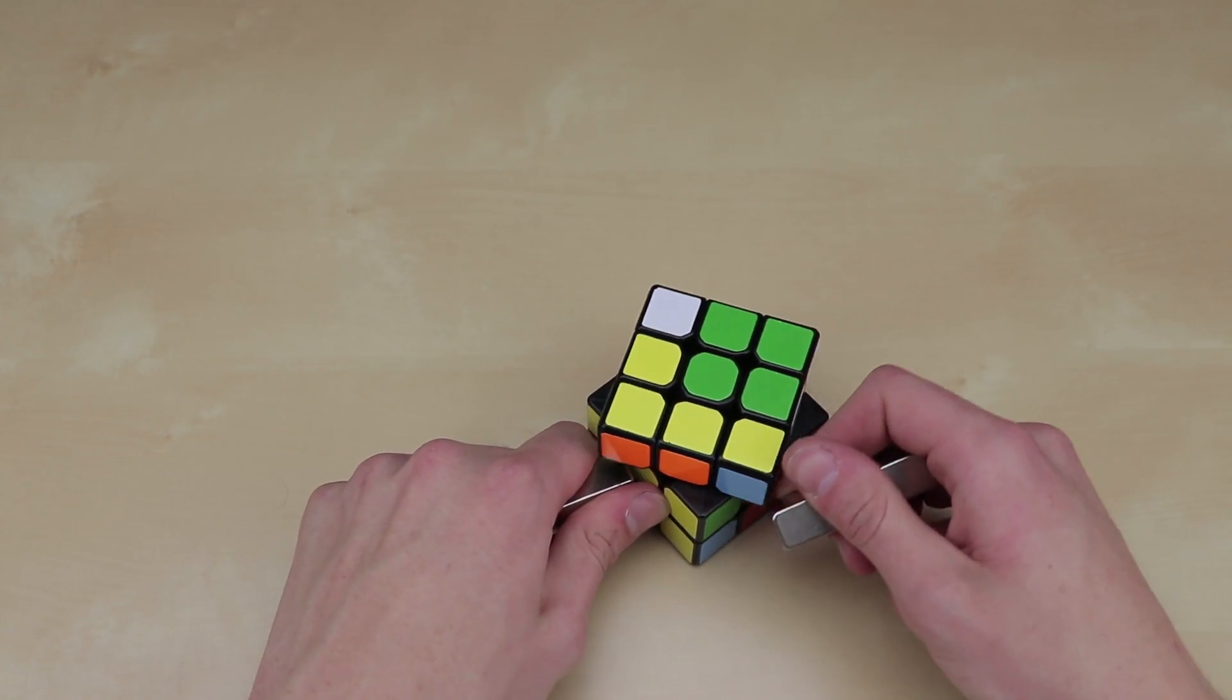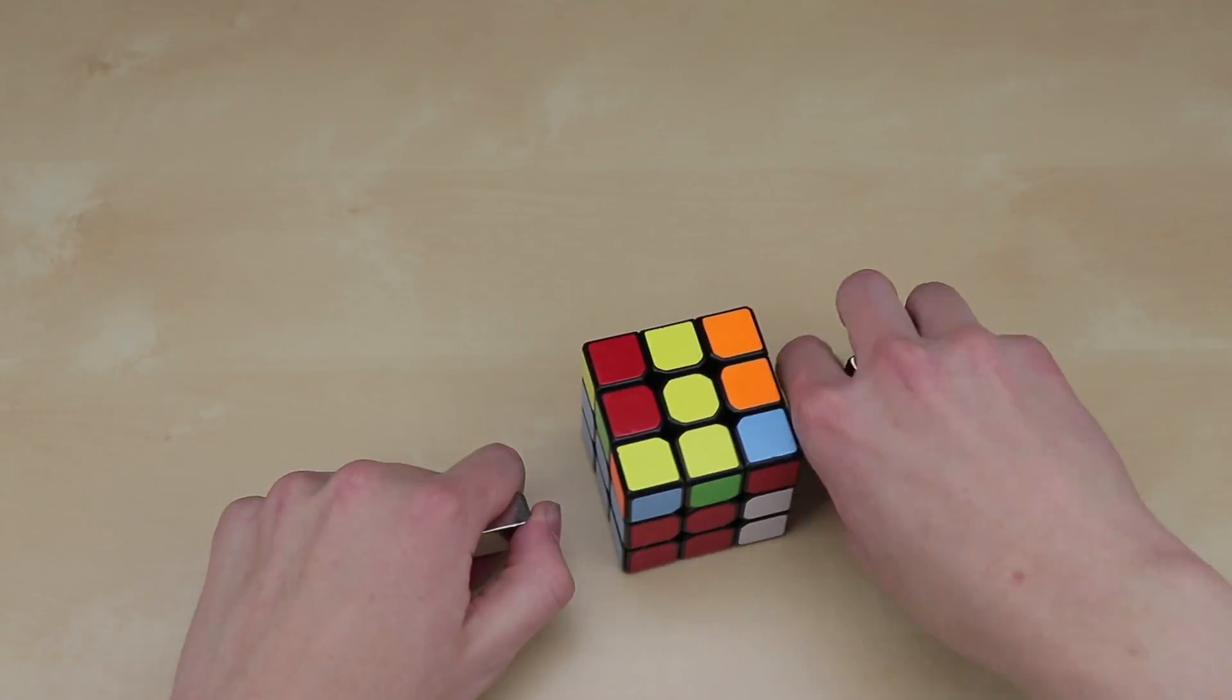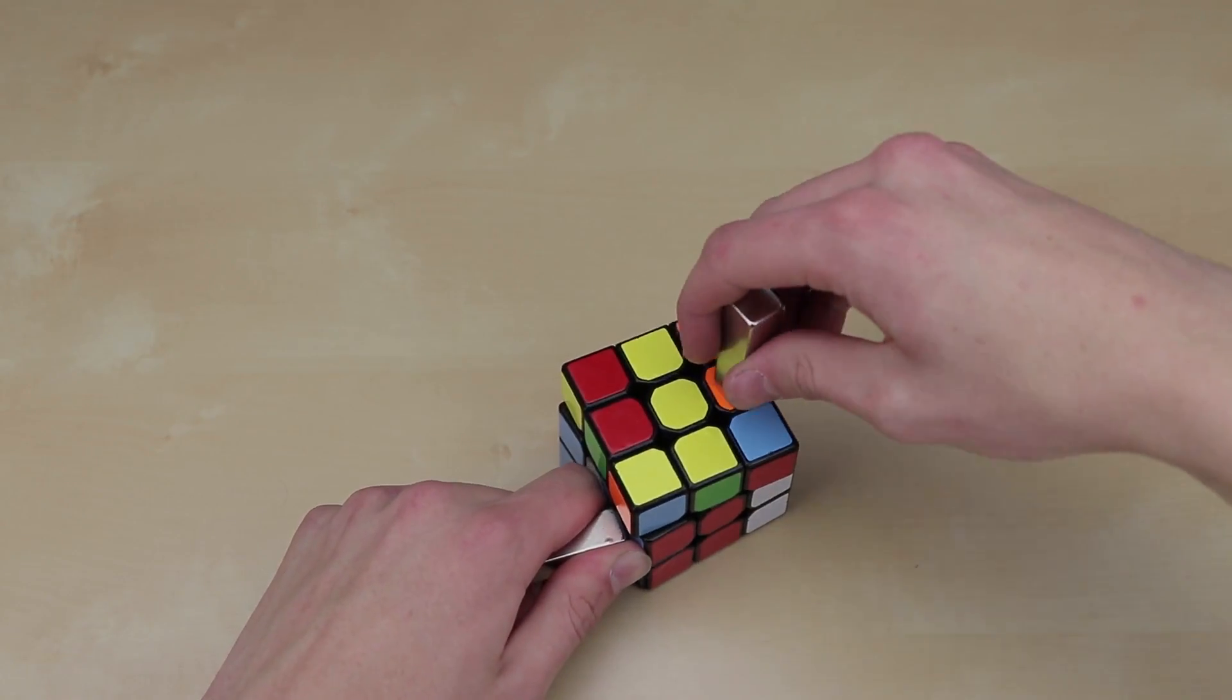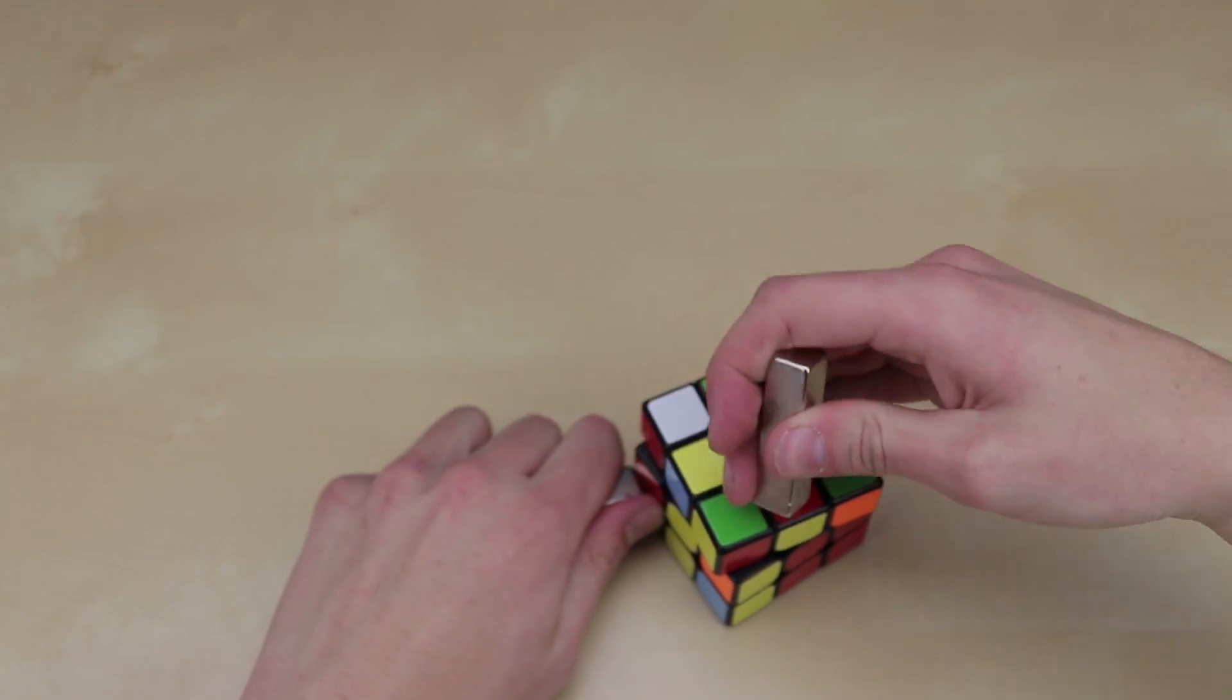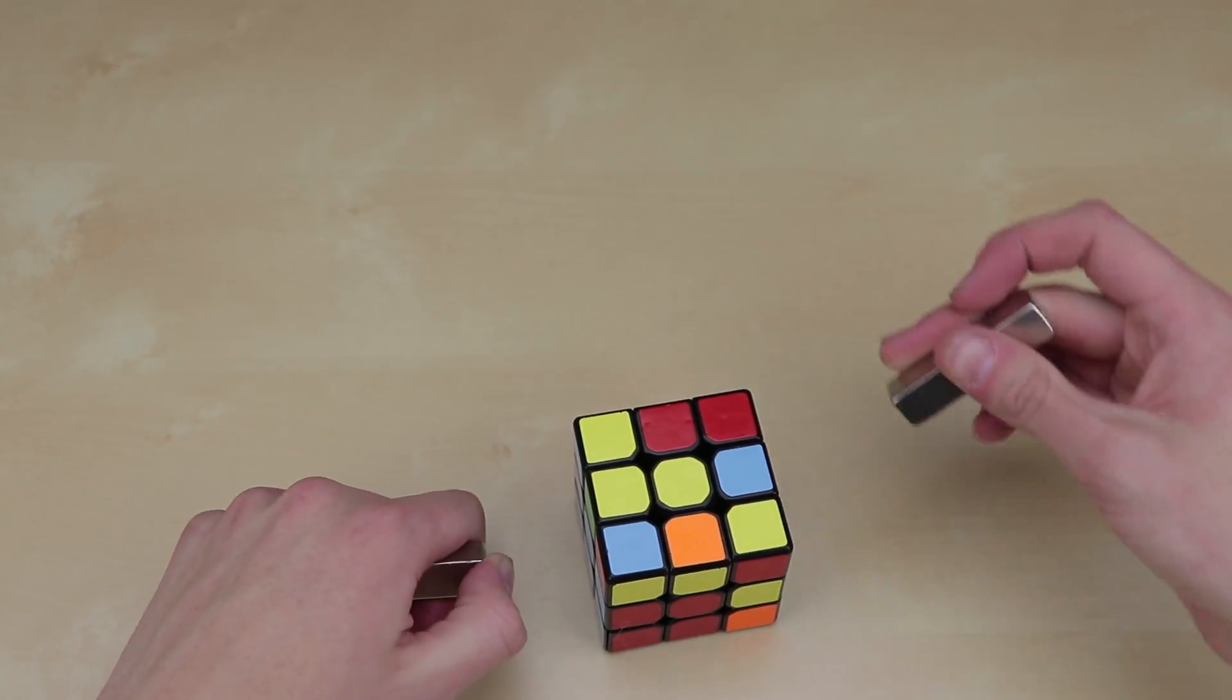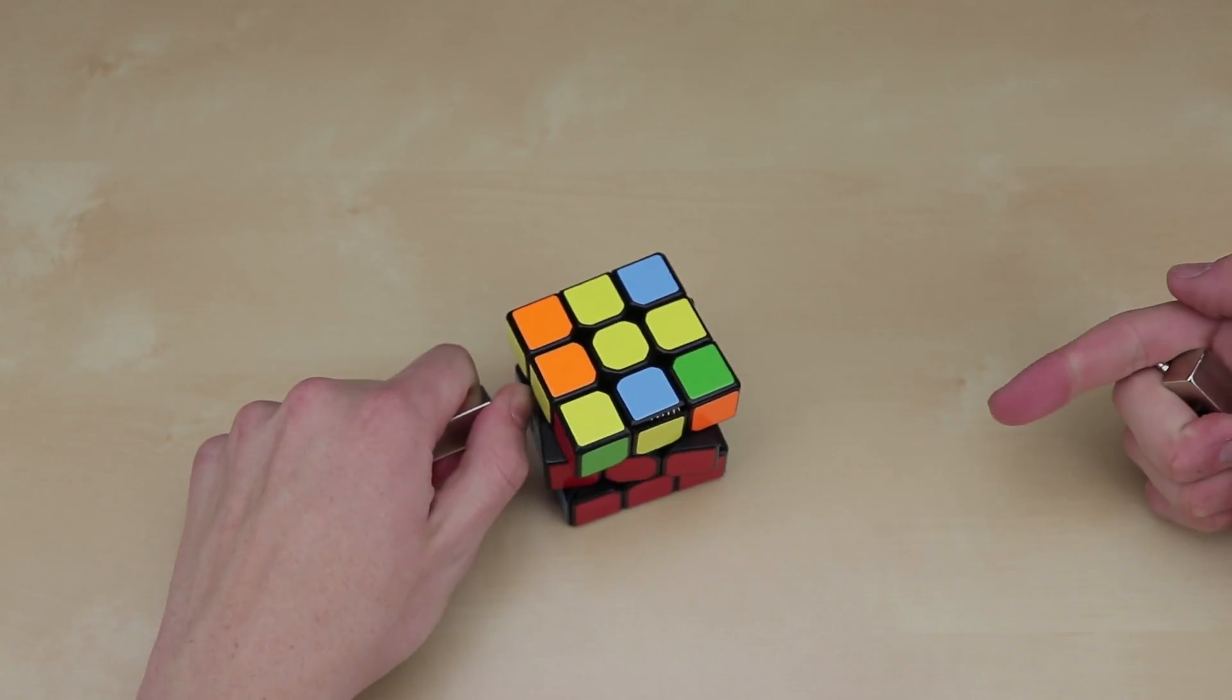And then I think we need to turn this side one more time for the next F2L pair. Turn the cube over like this. Bring the side up around like that. This piece up there. Form another F2L pair. Get them back in. There we go. Now F2L is solved.